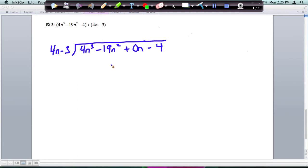Okay, so now we're going to do the same thing. We're going to look at our first terms. So 4n and 4n cubed. What do I need to multiply 4n by to get 4n cubed? And I need two more n's, so n squared, and that goes above the second term.